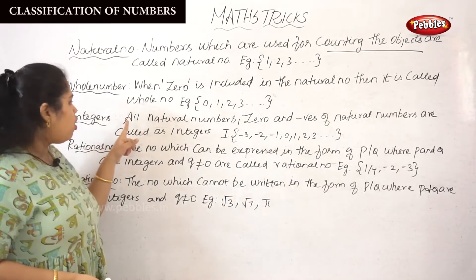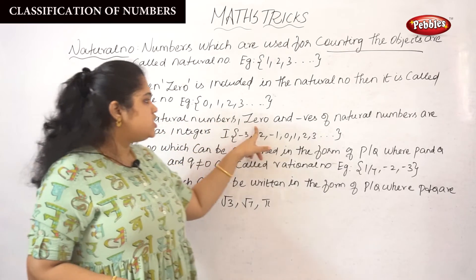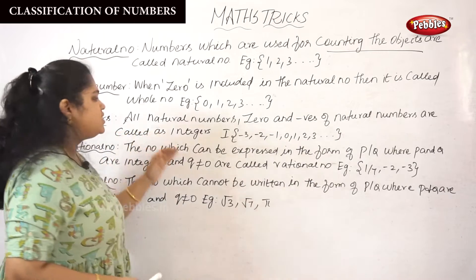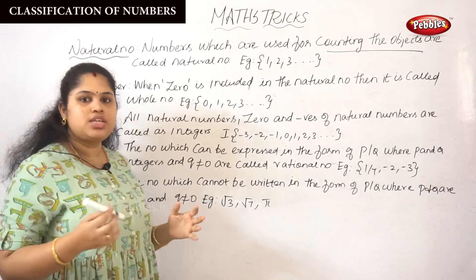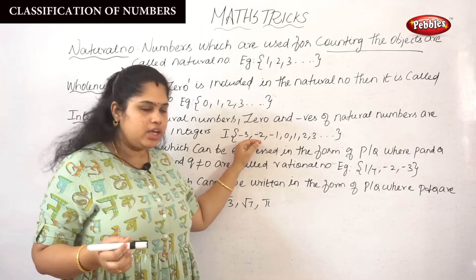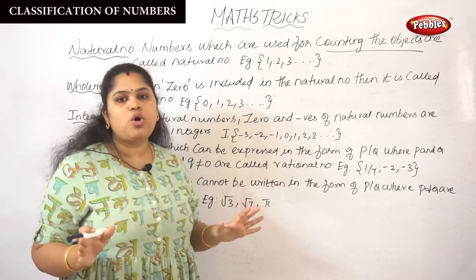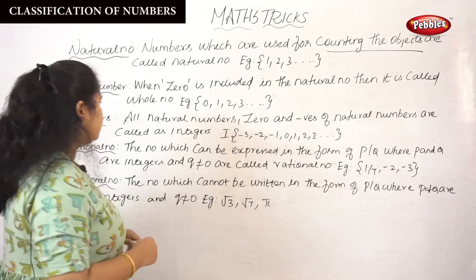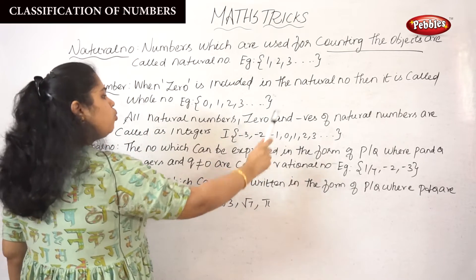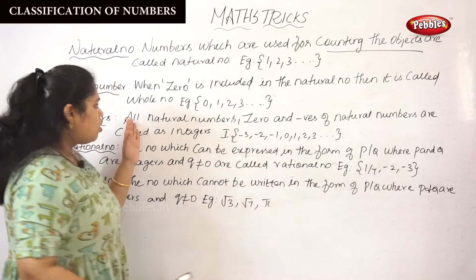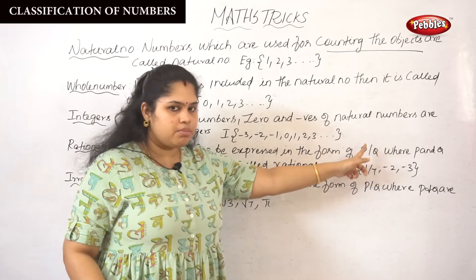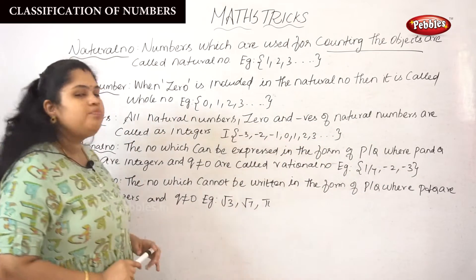Next, integer. All natural numbers, 0, and negatives of natural numbers are called integers. An integer includes every natural number along with negatives and 0. For example: ...-3, -2, -1, 0, 1, 2, 3 and so on.